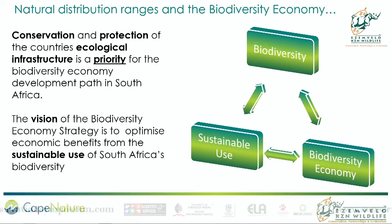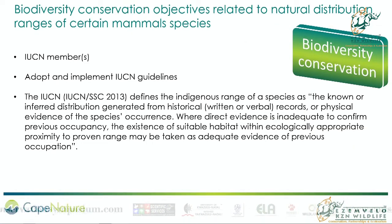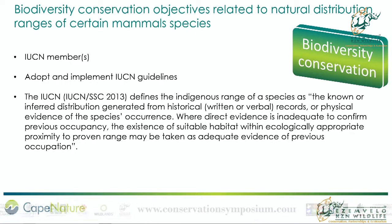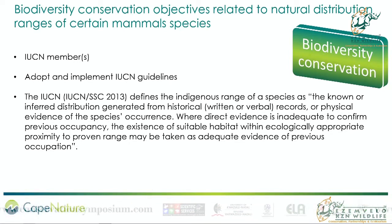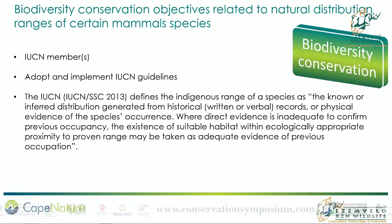Coming up with these maps, we're hoping to facilitate how we would look at what is sustainable use of biodiversity as opposed to agricultural assets. In a biodiversity conservation paradigm, the IUCN provides us with a definition of what an indigenous range is: it is the known or inferred distribution generated from historical written and verbal accounts or physical evidence of the species' occurrence. Where direct evidence is inadequate to confirm previous occupancy, the existence of suitable habitat within ecologically appropriate proximity to proven range may be taken as adequate evidence of previous occupation. This formed the basis for how we came up with a natural distribution range — synonymous with indigenous range in terms of the IUCN.